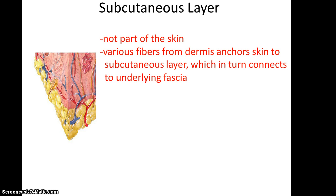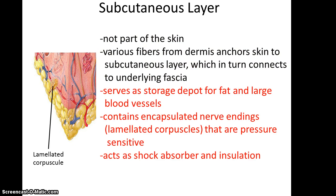The layer below the skin is the subcutaneous layer. It is not part of the skin, but various fibers from the dermis anchor the skin to the subcutaneous layer, which in turn connects to the underlying fascia. It also serves as a storage site for fat and large blood vessels. It contains the encapsulated nerve endings or lamellated corpuscles that are pressure-sensitive. And it also acts as a shock absorber and insulation.